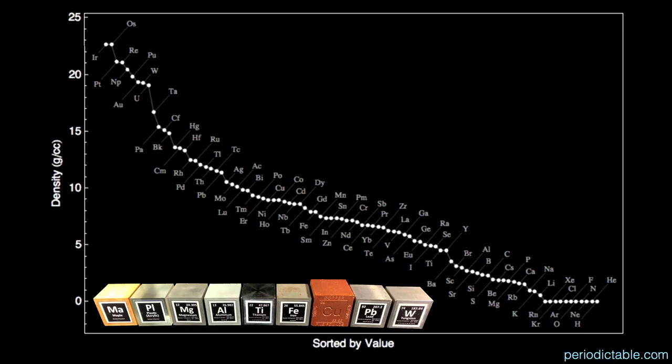My set of blocks have a wide range of densities with the densest at tungsten to lead to copper to iron to titanium to aluminum and magnesium. I also have plastic and wood blocks, but those are not technically elements.